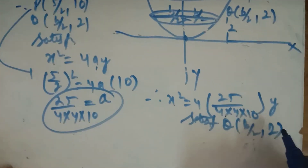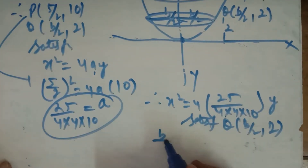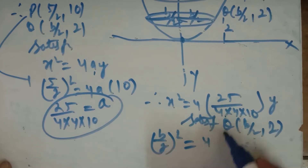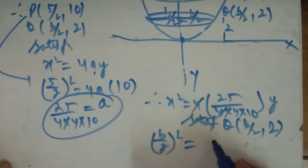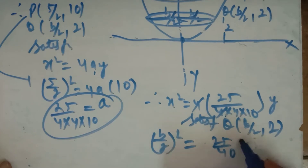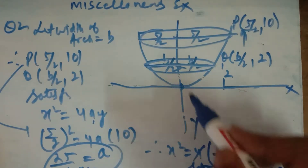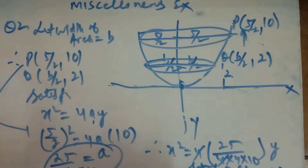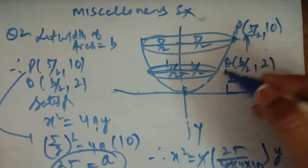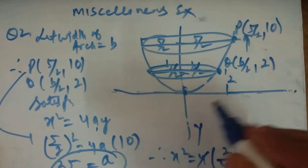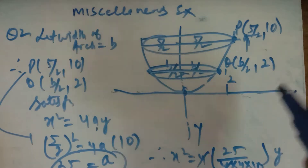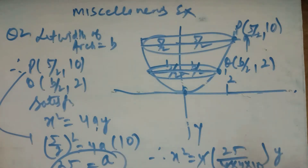X और Y की जगह B/2 और 2 रख दीजिए — X की value B/2 हो गई, 4 से 4 cancel हो गया। We'll get 25/40 × 2 = B² से B की value आ जाएगी। That is the width of the arc 2 meters from the base — vertex से 2 meter की दूरी पर। इस तरह से 2 points बन रहे हैं जो equation of the vertical parabola को satisfy करेंगे।